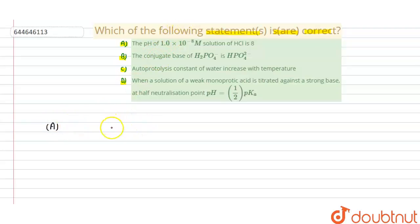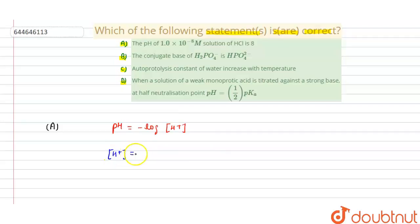For option A, the pH of a 1.0×10⁻⁸ molar concentration HCl solution. We know that pH equals minus log of [H⁺]. The H⁺ concentration is given as 1×10⁻⁸ molar. Using this formula, the answer comes out as pH = 8.